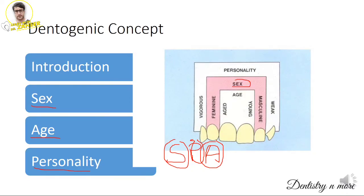For sex: feminine patients get slightly rounded teeth, masculine patients get more flat and sharp teeth. For personality: vigorous personalities get sharp teeth, while weak or gentle personalities get a rounded appearance. For age: young patients have slight mamelons, while aged patients show some amount of attrition. Writing under these four headings will suffice for an answer on the dentogenic concept.